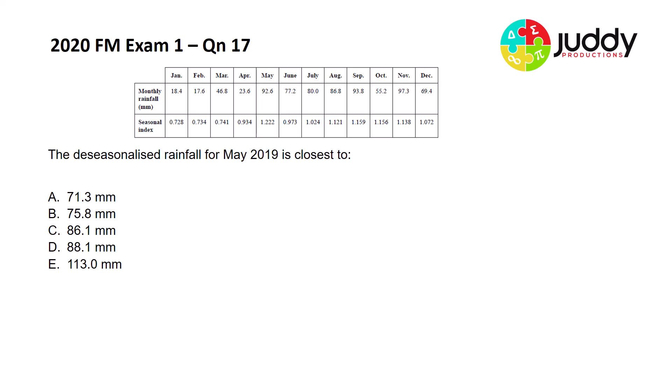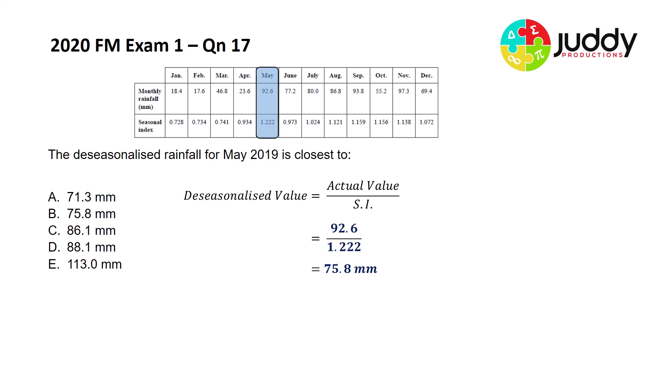Continuing with the 2020 paper, exam number one, question 17: the de-seasonalized rainfall for May in 2019 is closest to. The de-seasonalized value is the actual value divided by the seasonal index. For May, the actual monthly rainfall is 92.6 millimeters and the seasonal index is 1.222. Substituting those values in, we get a de-seasonalized rainfall for May of 75.8 millimeters, which is option B.